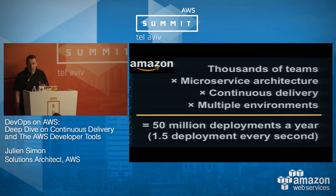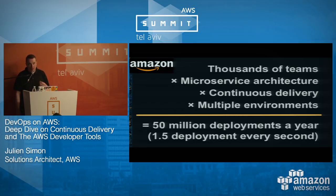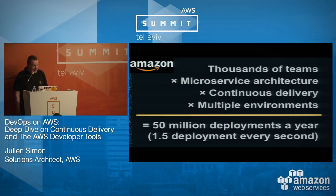Those are numbers from 2014, so you could expect them to be even higher today. Amazon.com is doing over 50 million deployments every year — that means more than one deployment every second. Count to 10 in your head: 10 services have been deployed on Amazon.com. It's a crazy number. What these numbers tell me is that you cannot do this if it's not totally automated — humans don't work well at the sub-second scale. So it needs to be fully automated.